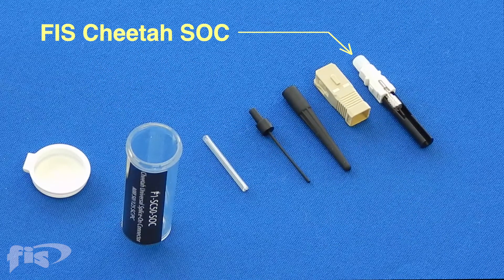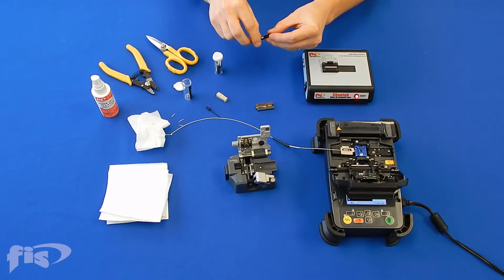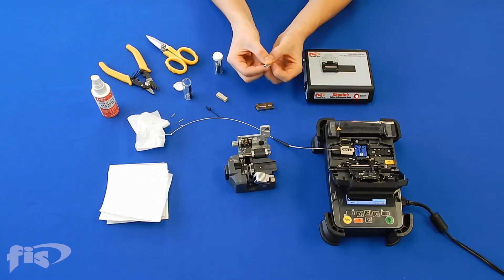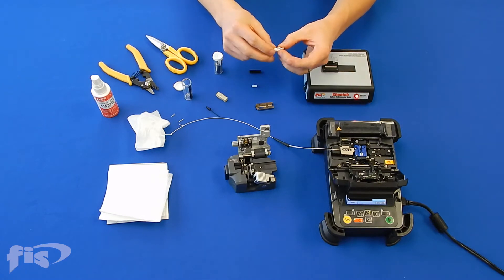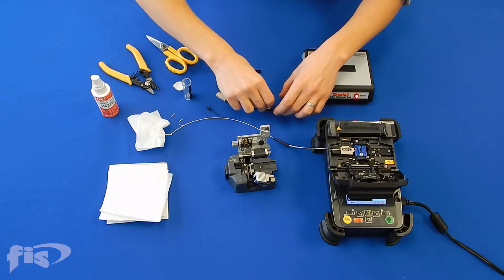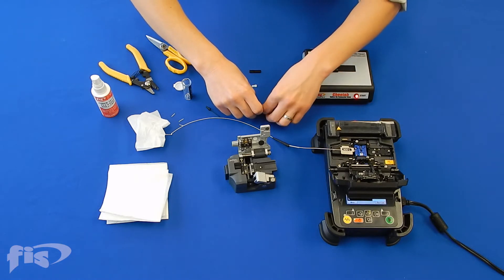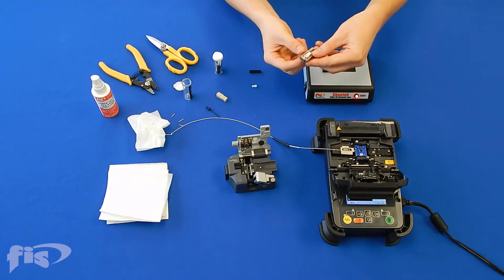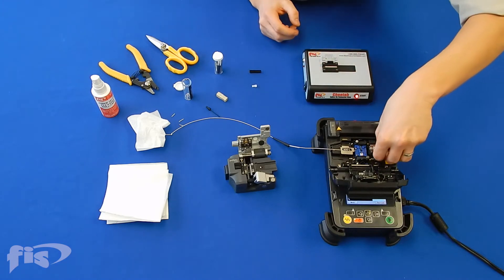Take the FIS Cheetah SoC, remove the cleave protector and ferrule cap. Place the connector into the FIS Cheetah SoC holder. Place the connector holder on the right side of the splicing machine.